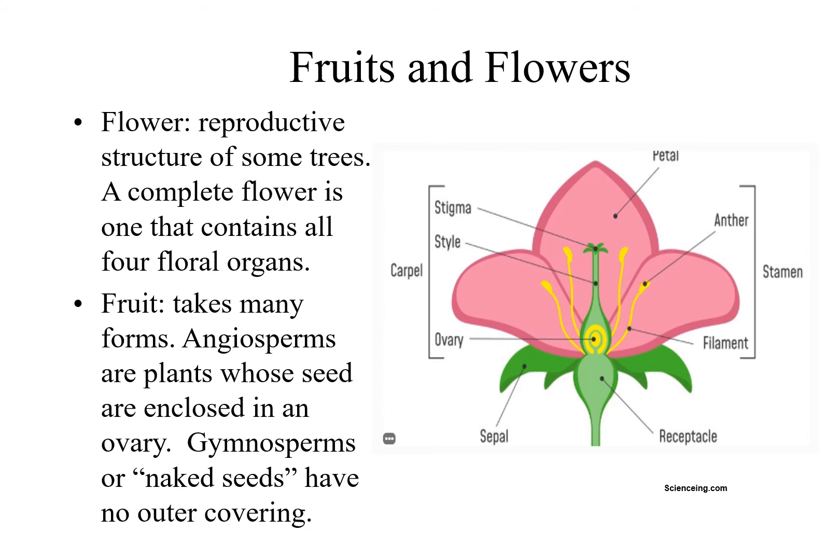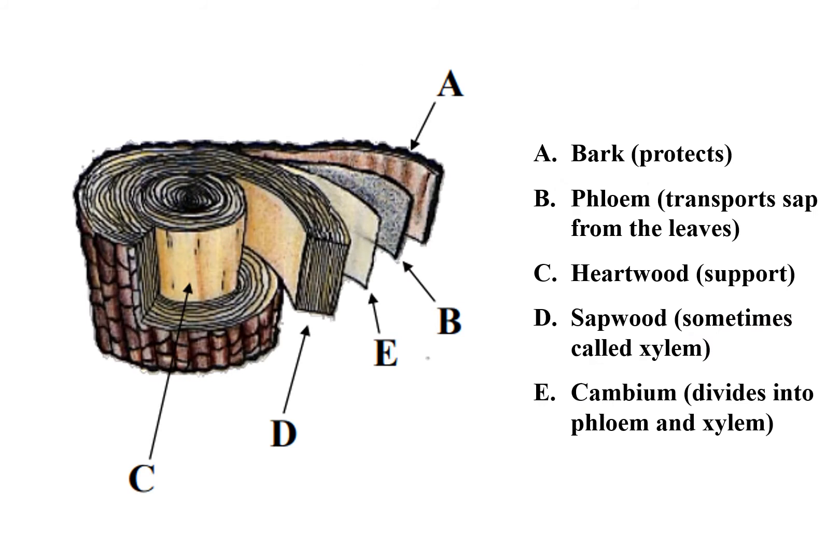Flowers are the reproductive structures of some trees. A complete flower is one that contains all four floral organs: petals, sepals, one or more carpels (the female reproductive organ), and stamens (the male reproductive organ). Tree fruits can take many forms, and we'll discuss some of those in the Tree ID module. Angiosperms are flowering plants whose seeds are enclosed in an ovary. Gymnosperms, or naked seed plants, are those that have no outer covering.